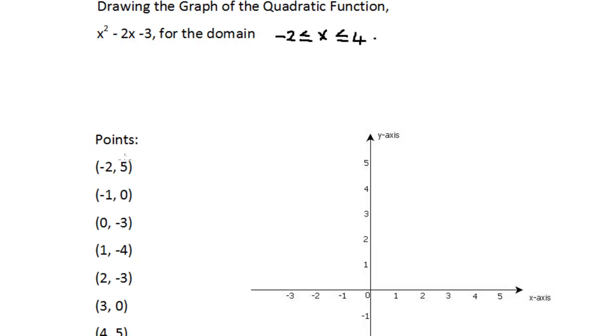Now right here, we have the points listed. Let's recap how we got these points. The procedure when drawing the graph of a quadratic function is we substitute the values in the domain, which are the x values, into the equation. And the value that we obtain will be the corresponding y values.